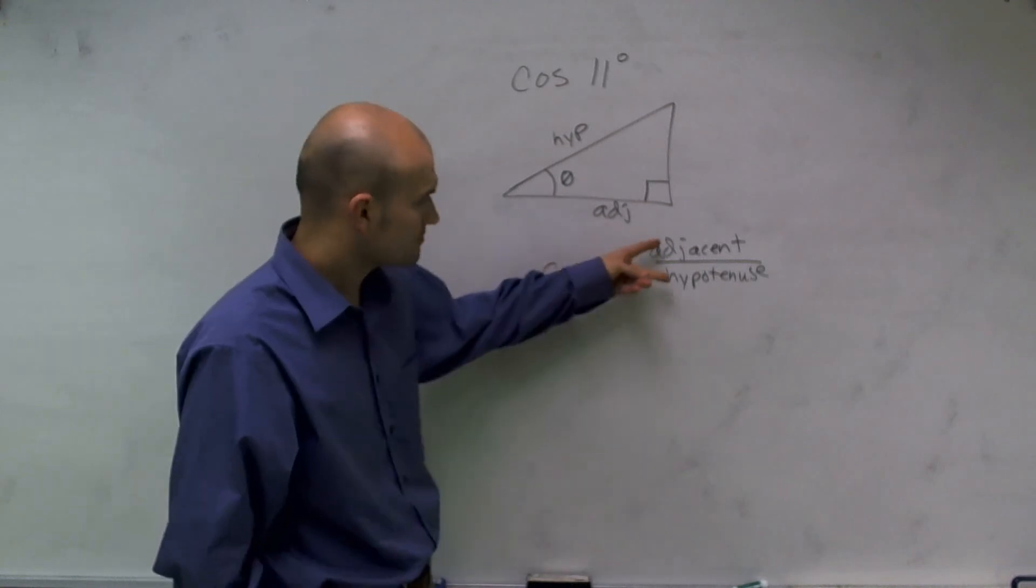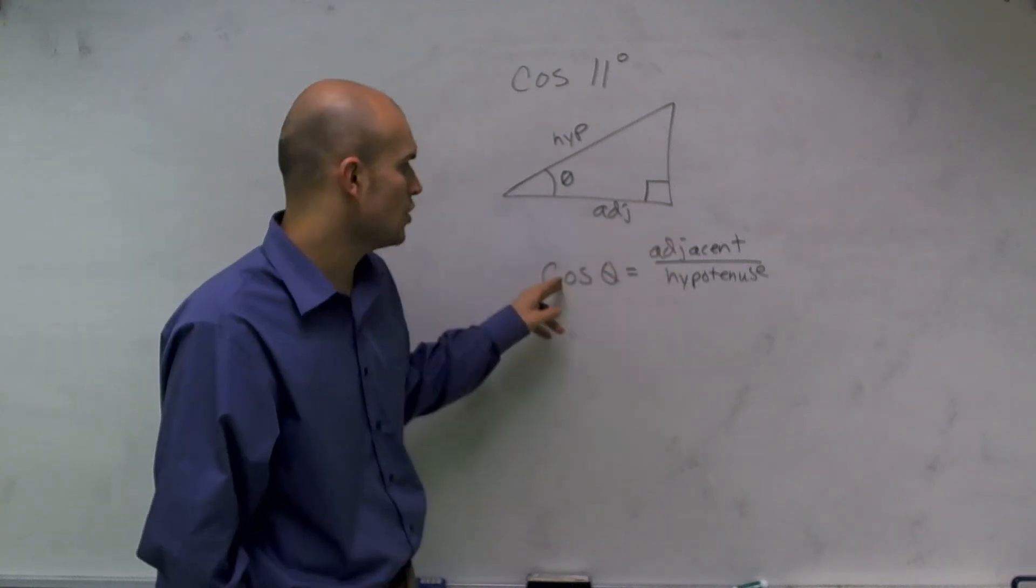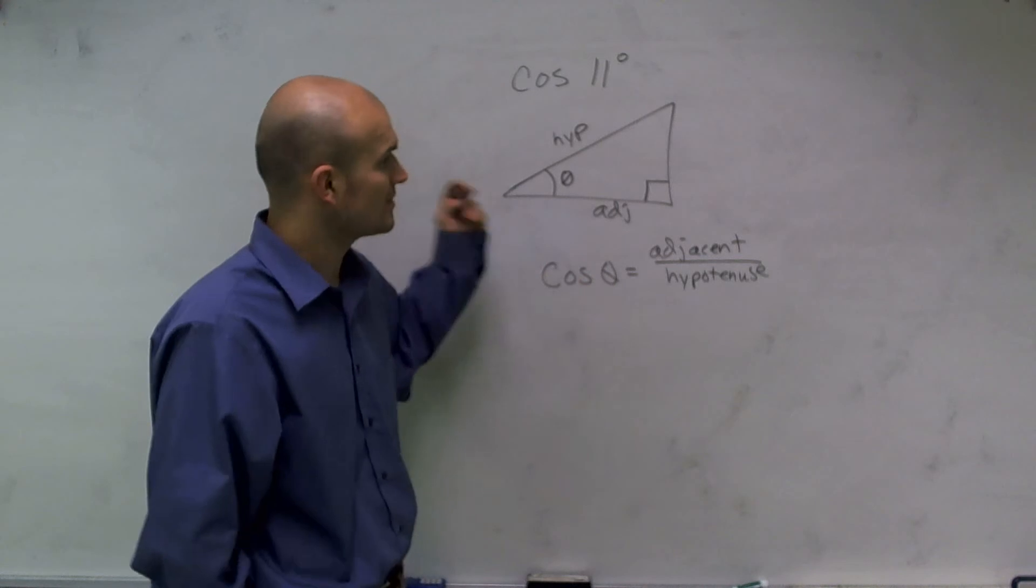Now, that ratio is equal to the cosine of my angle. Now, here's the important thing.